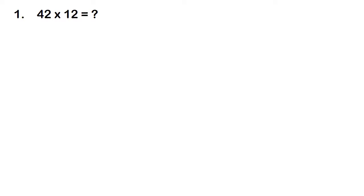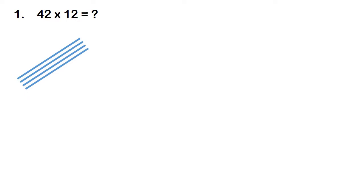The first problem is 42 multiplied by 12. This is a normal two-digit number problem. In this method, we are going to use lines to do the sums. The first digit is 4, so draw 4 lines diagonally — 1, 2, 3, 4 — like this.